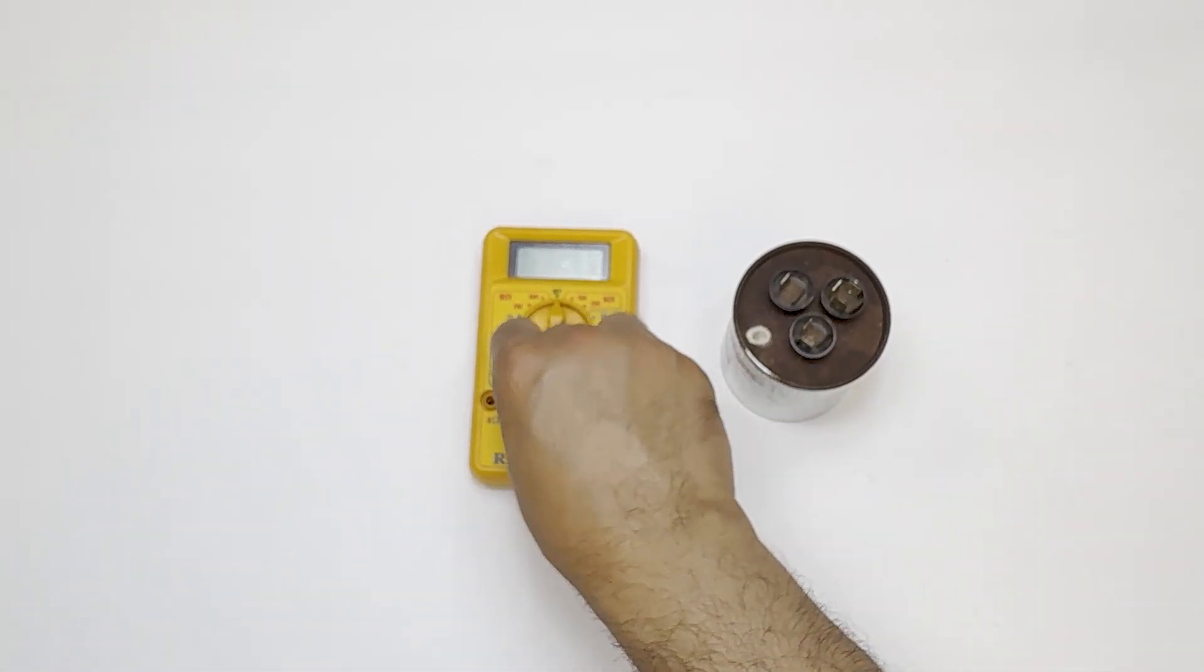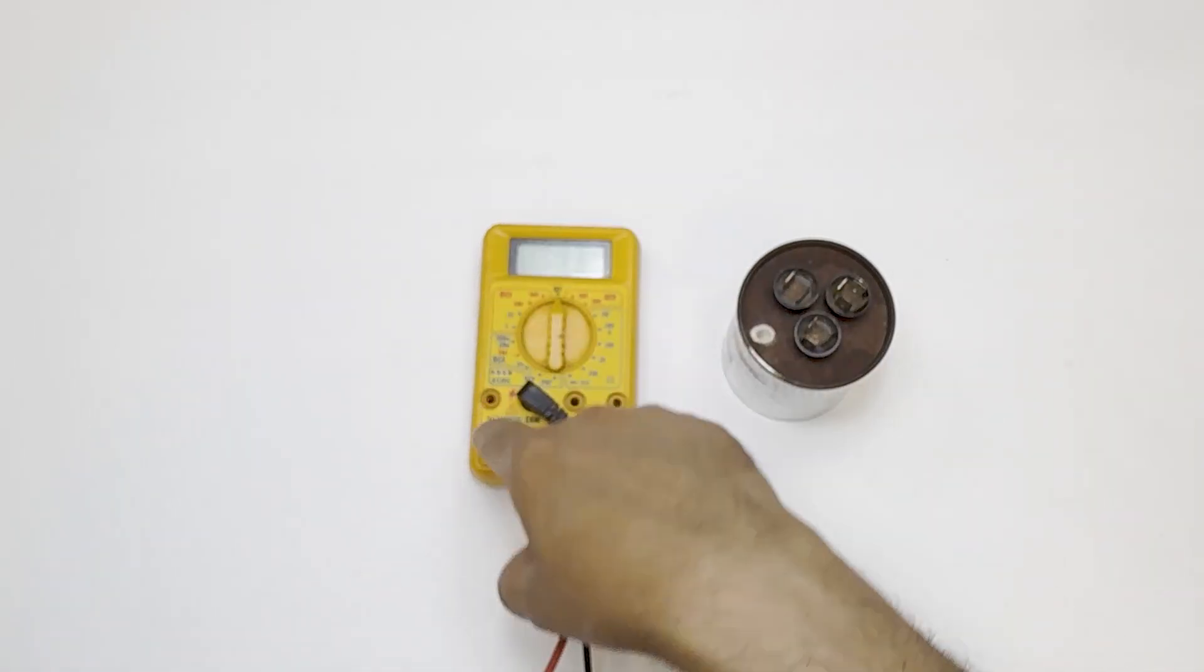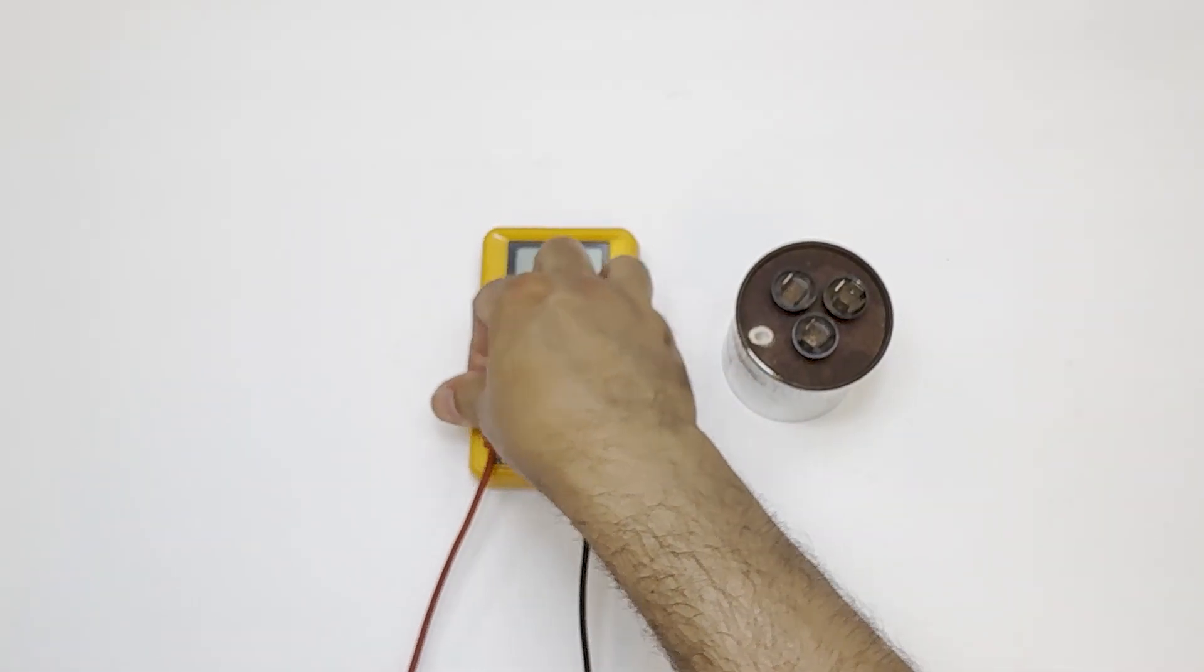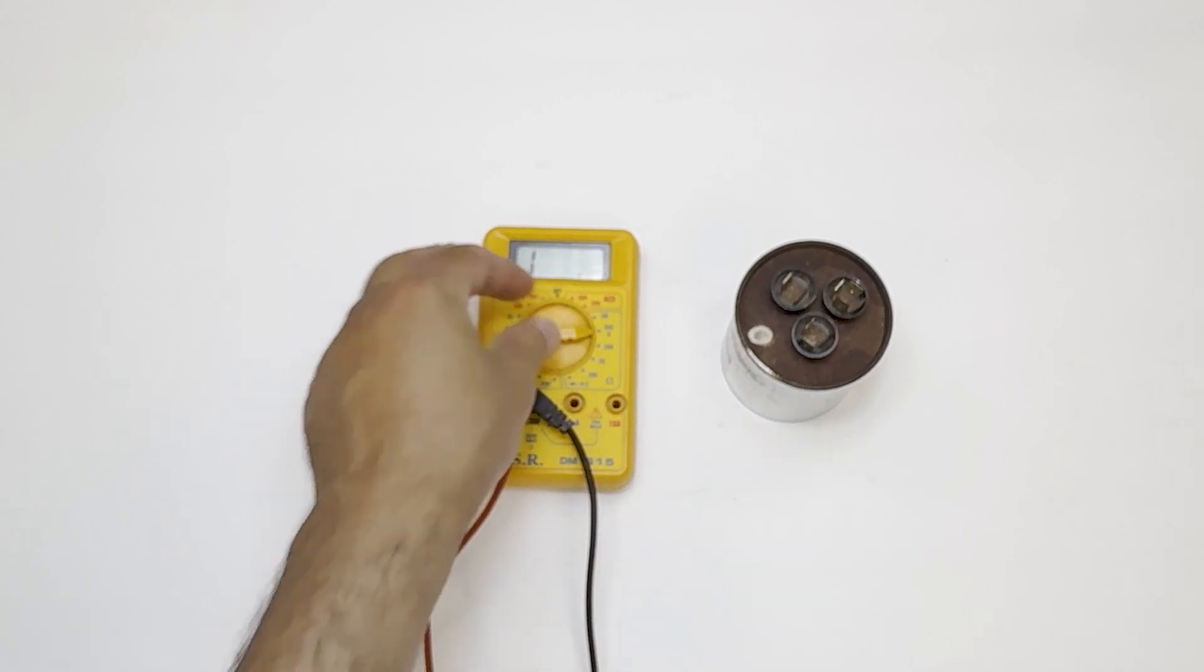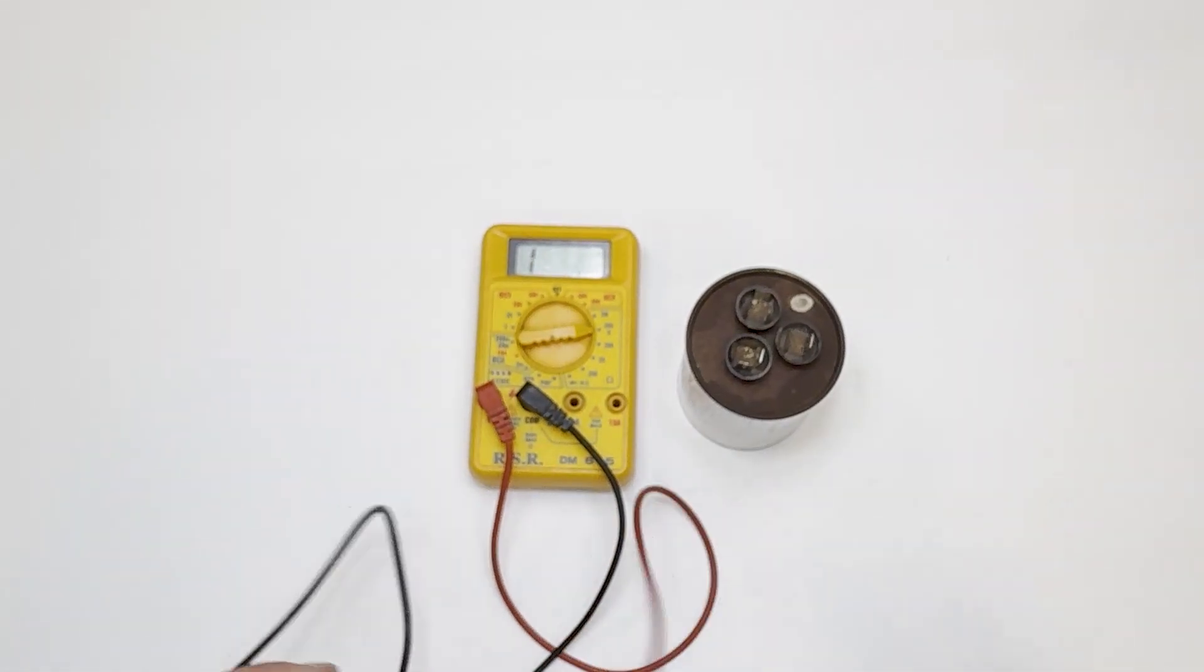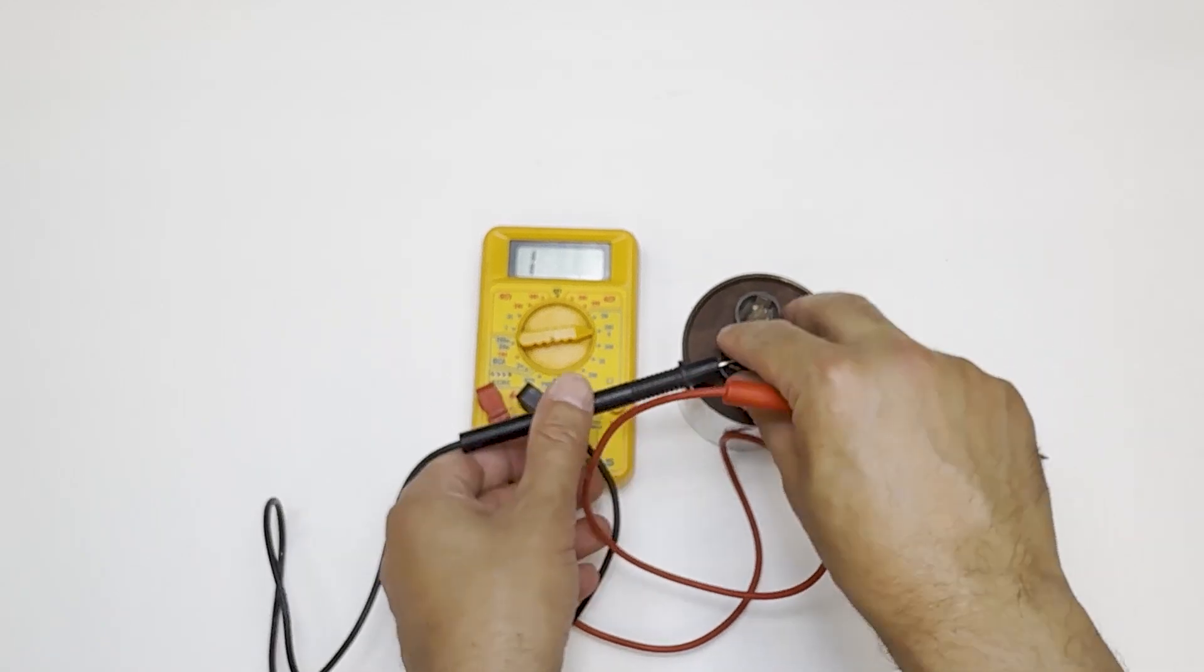So, the first thing we'll do is put the black probe to common and the red to OHMS. Set your multimeter to OHMS, and I use the 2 milliohms or the 200 kiloohms setting. Then put the black lead on the common terminal, and the red line on either fan or HERM.